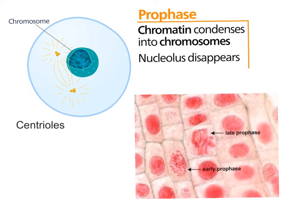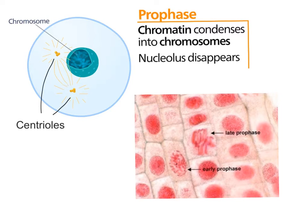The centrioles, which are cell structures involved in division, start to move to opposite ends of the cell. The spindle apparatus — these spindle protein fibers — help to push the centrioles away from one another. Those spindles are then going to connect to the chromosomes to move them around.